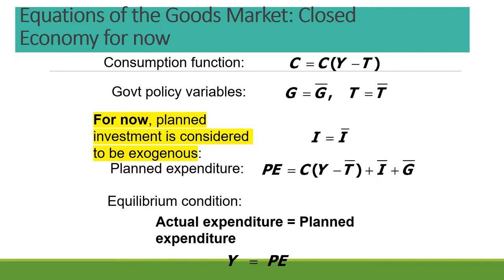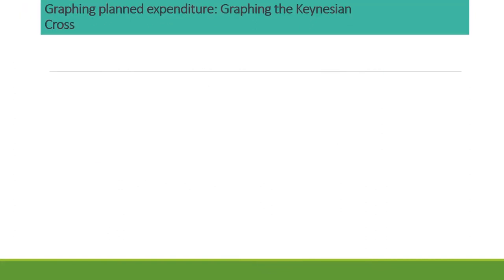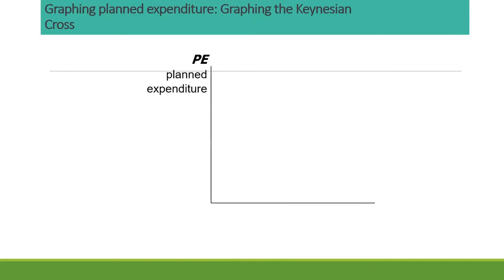At equilibrium, actual expenditures are equal to planned expenditure, so Y equals PE. Therefore income or output is considered equal to planned expenditures as well. We can represent this along what's known as the Keynesian cross.